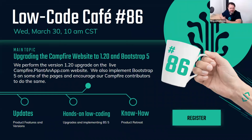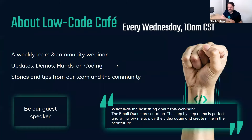Hello everyone and welcome to a new edition of Low Code Cafe episode 86. Today we have a special edition where we'll do a live upgrade to one of the Plant-an-App systems to version 1.20. As many of you already know, 1.20 is a major upgrade and it does require some special steps. Before that, let me give a brief introduction to people that are new to this event.